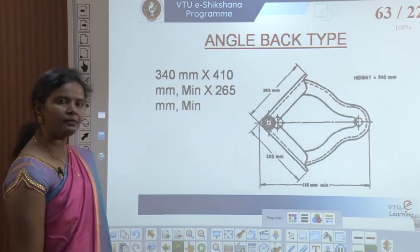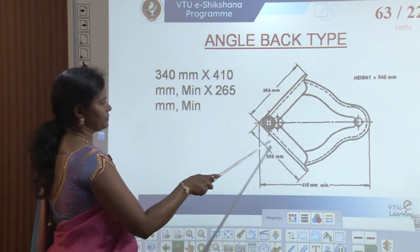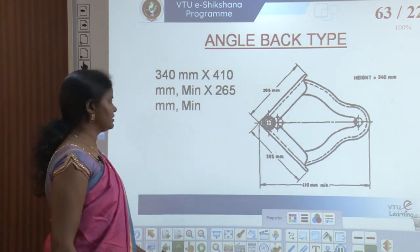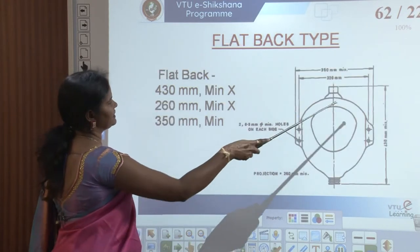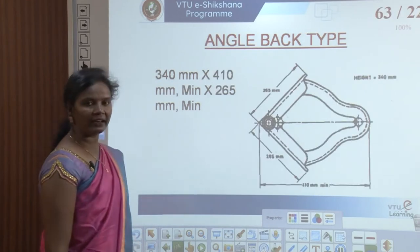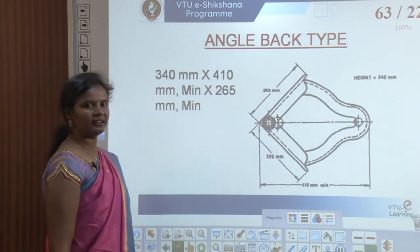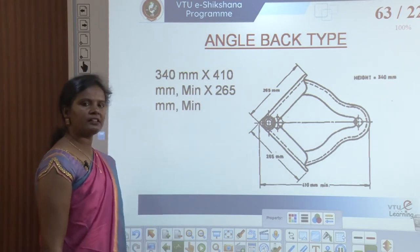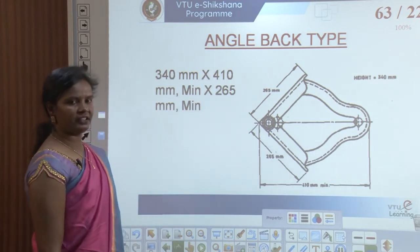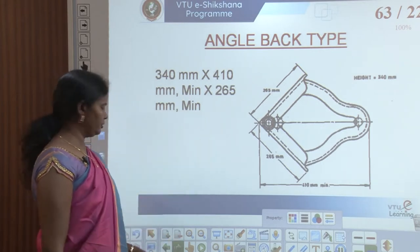The next one is the angle back type. In the angle back type, the back is at a 45-degree angle. The dimensions for this are 340 mm by 410 mm by 265 mm. 265 mm is the height of the urinal.